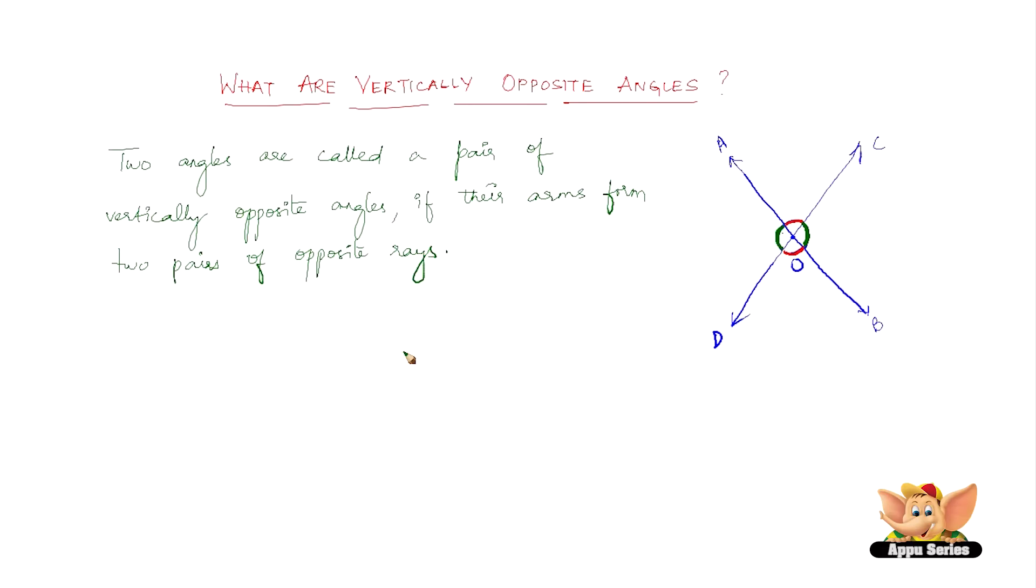This definition simply means, for example, there are two angles, AOD and angle BOC. The arms of angle AOD are OD and OA, and the arms of angle COD are OC and OB.